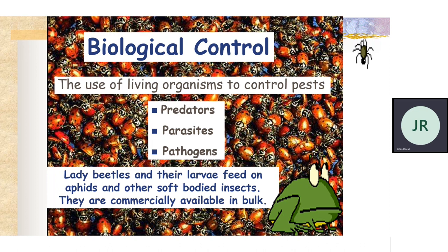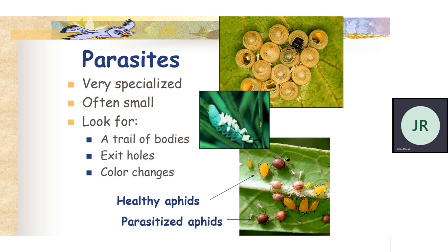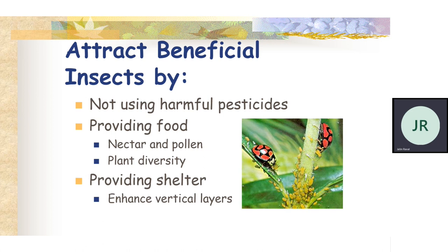Another aspect of biological control is the use of living organisms — it could be predators, parasites, or pathogens. In the background you can see the picture of the ladybird beetle — the larva feeds on aphids and other soft-bodied insects. Parasites are very specialized and often very small. A trail of bodies, exit holes, or color changes can be found. In the example, you can see healthy aphids with yellowish color and parasitized aphids, where you can observe the color change. Attract beneficial insects by not using harmful pesticides — by providing food, nectar, and pollen.